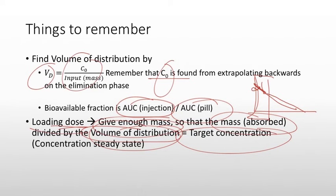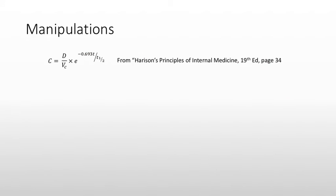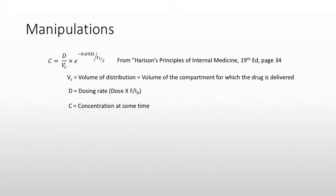Now I'm going to show you that this is all you need to know by looking at an equation from Harrison's Principles of Internal Medicine — everything else is just manipulating the numbers. Harrison's uses a particular equation. Note that Harrison's uses slightly different notation: VC is the volume of distribution (the volume of the compartment to which the drug is delivered), D is the dosing rate (dose times fraction over dosing interval), and C is the concentration at some time.